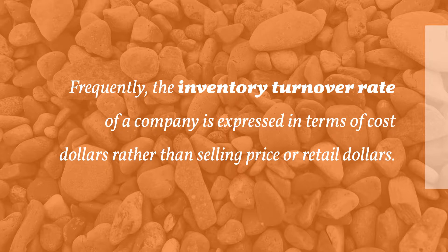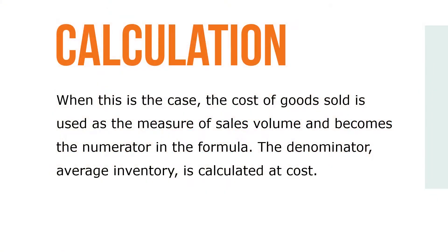Frequently, the inventory turnover rate of a company is expressed in terms of cost dollars rather than selling price or retail dollars. When this is the case, the cost of goods sold is used as the measure of sales volume and becomes the numerator in the formula. The denominator, average inventory, is calculated at cost.